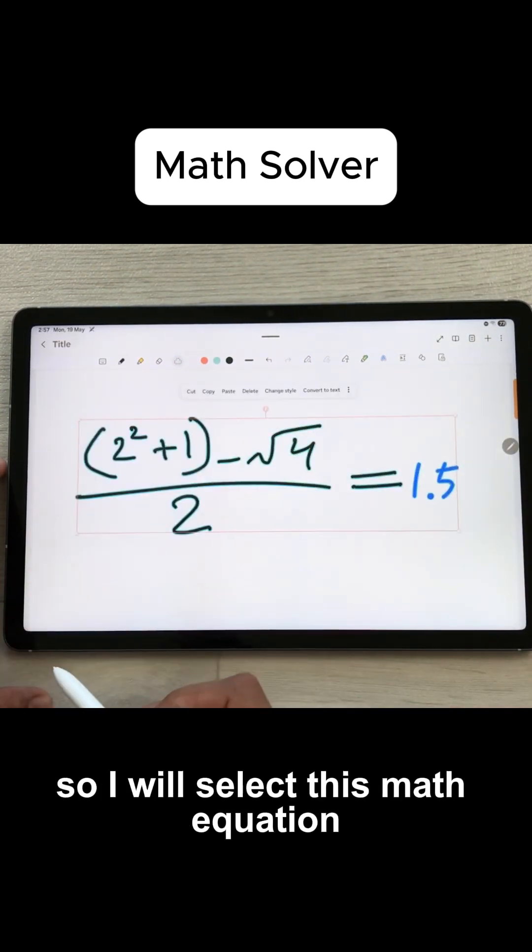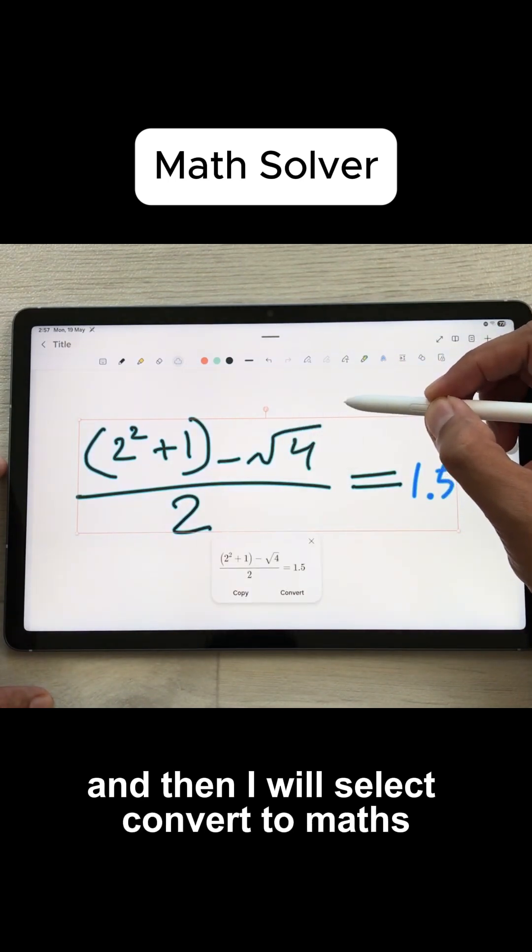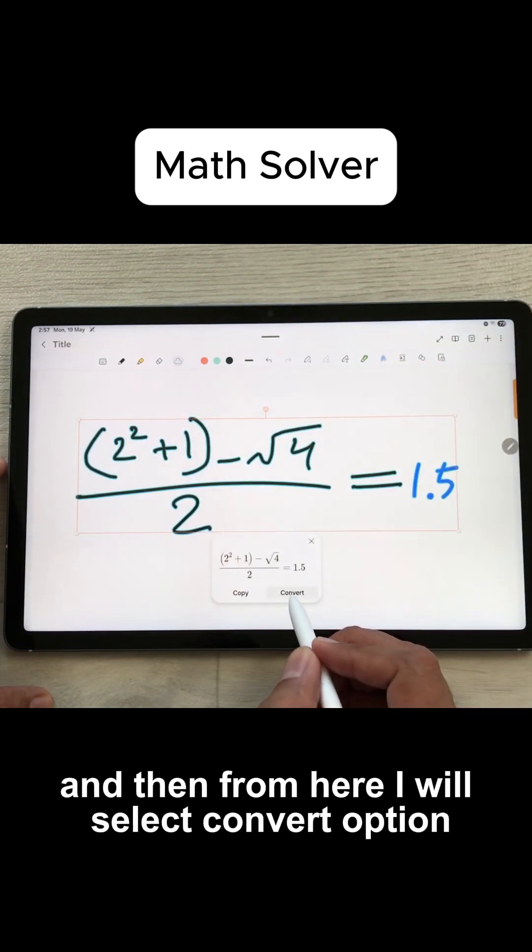I will select this math equation and then I will select these three dots and then I will select convert to maths and then from here I will select convert option.